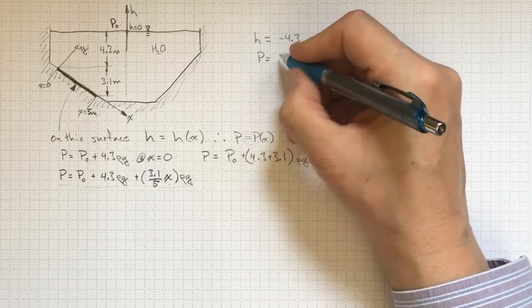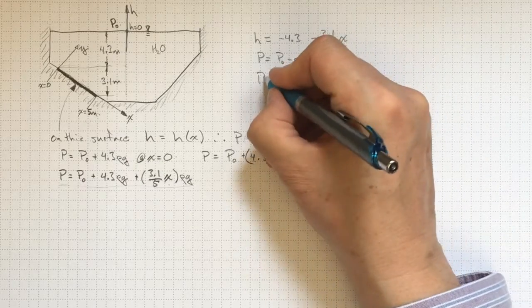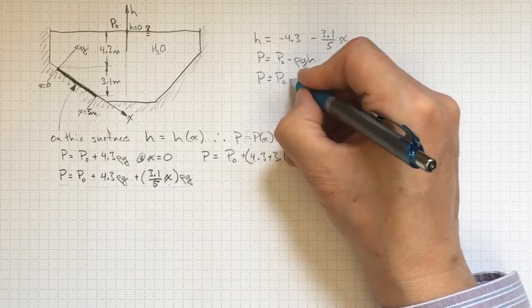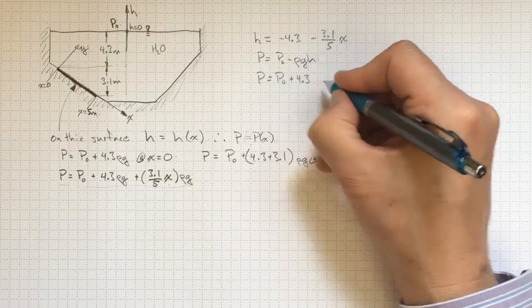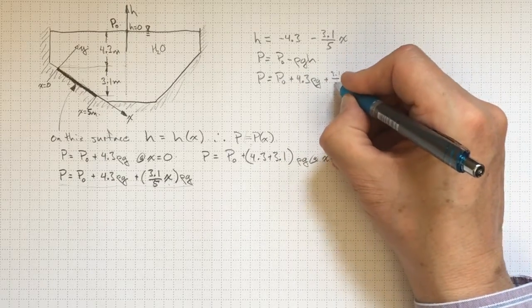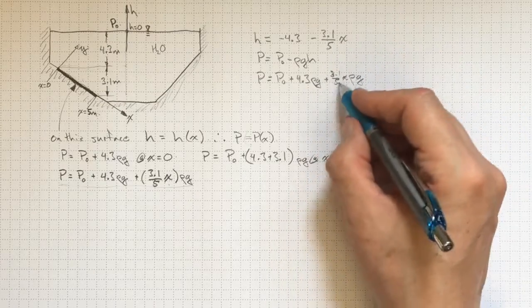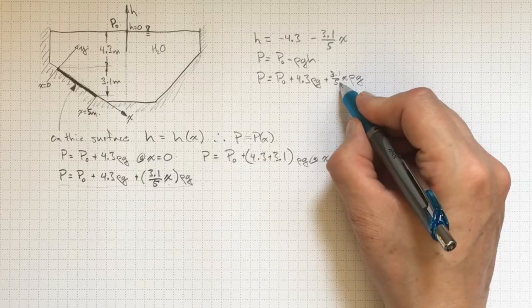p equal to p-naught minus rho g h. So p is equal to p-naught plus 4.3 rho g plus 3.1 over 5 x times rho g. Either one of those, they give you the same answer.